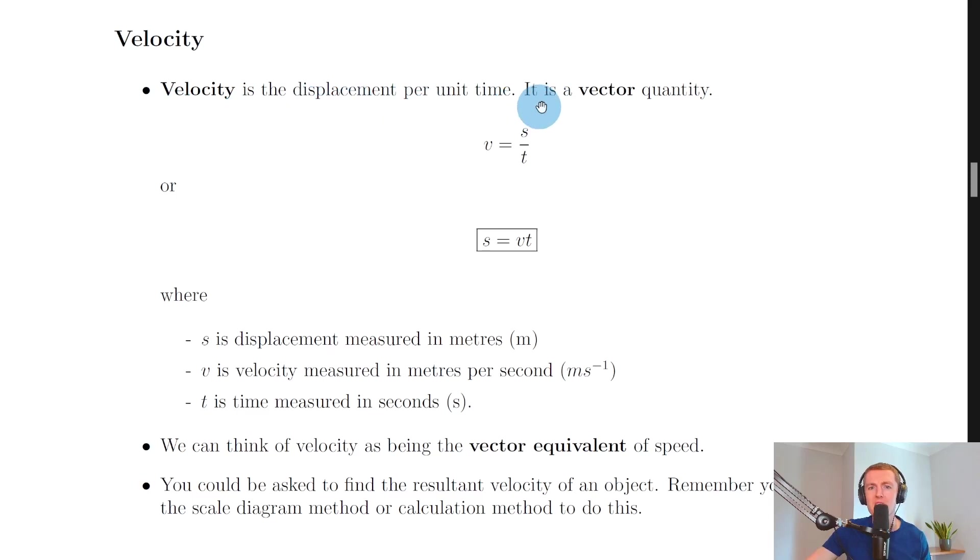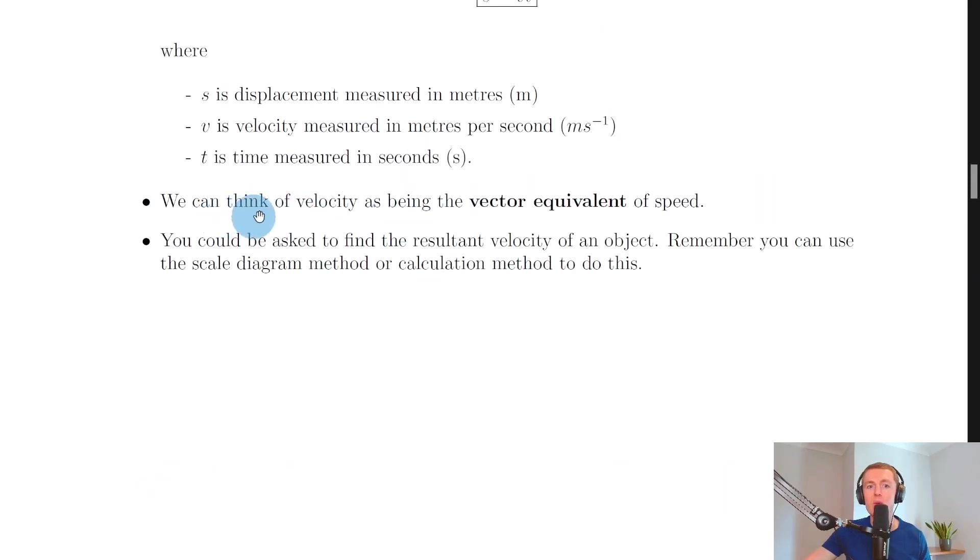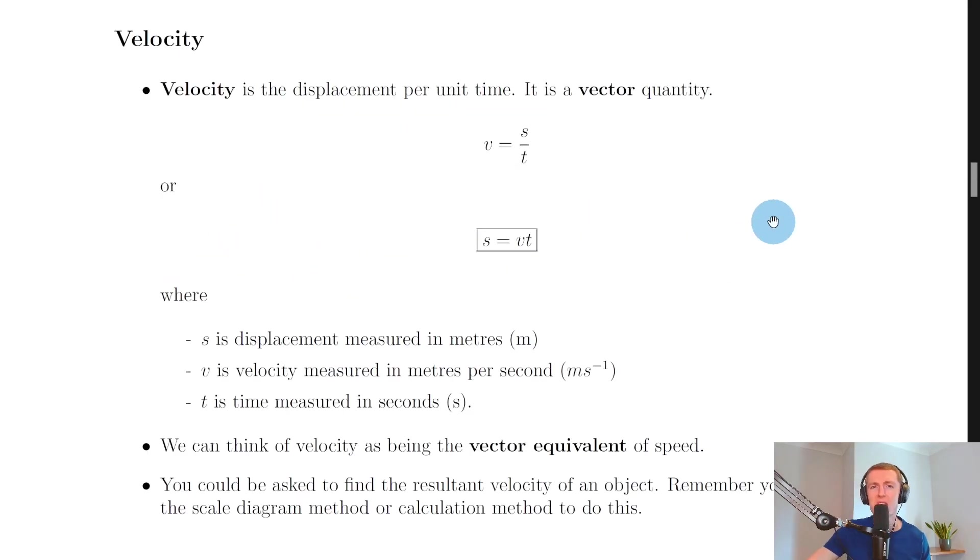So we've got displacement per unit time and we say it's a vector quantity. So remember we can think of velocity as being the vector equivalent of speed. So that is a speed with a direction.